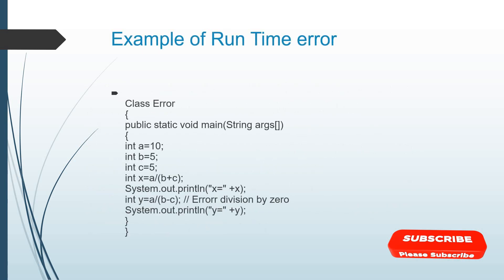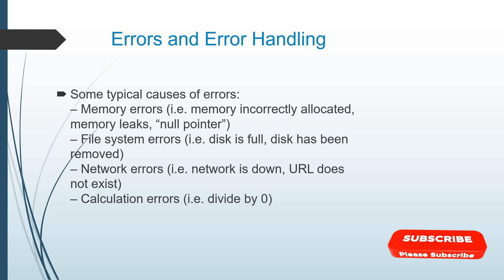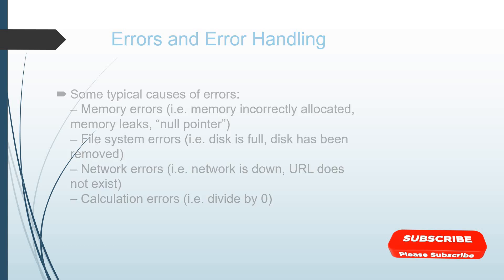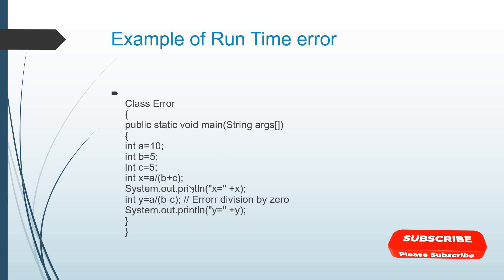Example of a runtime error: you have a public PSVM, then int a equals 10, integer b equals 5 — you've defined the variables. Then integer x equals a divided by b plus c. You wanted to print x. Then integer y equals a divided by b minus c — this gives error: division by zero. If you divide by zero, it will give you an error. So division by zero gives you a runtime error.